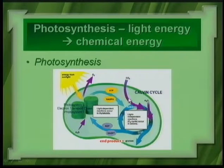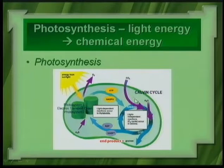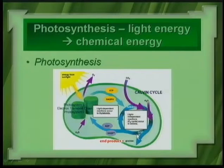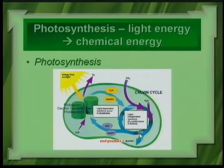ATP and electrons from NADPH are carried over to the Calvin cycle to drive its reactions. It isn't until the Calvin cycle that carbon dioxide comes in. In the Calvin cycle, you get the formation of a three-carbon compound known as glyceraldehyde 3-phosphate. This three-carbon compound is joined to another three-carbon compound to make glucose.